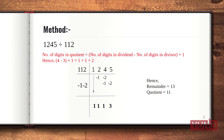Next, copy down the first digit of the dividend — the leftmost digit, 1, is copied down. Now I will multiply this 1 with the transposed digits of the divisor, that is minus 1 and minus 2, and write the answers below the corresponding digits of the dividend. So 1 multiplied with minus 1 gives minus 1, written below the 2. Then 1 multiplied with minus 2 is minus 2, written below the 4. This step is repeated until we reach the rightmost digit of the dividend.